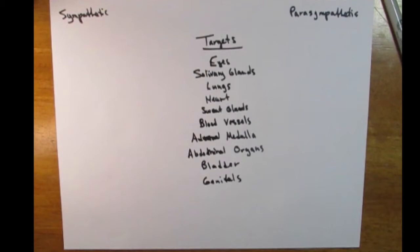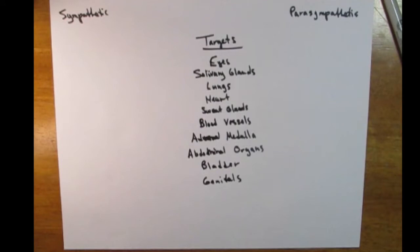For example, if we go down the list — heart, sweat glands, blood vessels, adrenal medulla, abdominal organs, bladder, genitals — it's not super detailed, especially something like 'abdominal organs,' which is a pretty big category. Let's take a look at the adrenal medulla. The adrenal medulla secretes a substance called adrenaline, which you've probably heard of. Adrenaline is secreted by the adrenal medulla — that's how it gets its name. It's also called epinephrine.